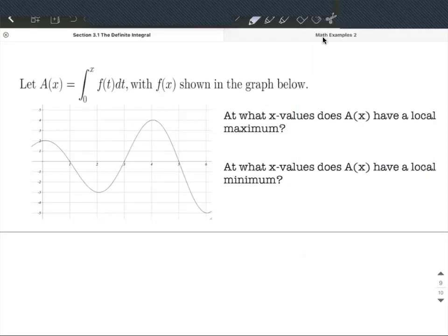In this case we are given the graph of a derivative, and it's defined up here, but sometimes it's tough to read this. We have A(x) defined to be the definite integral from 0 to x of f(t) dt, and the graph of f(x) is given right here.